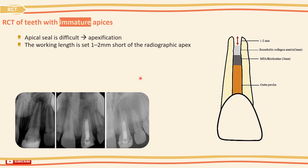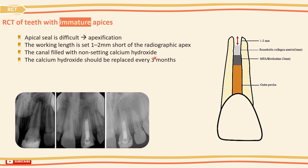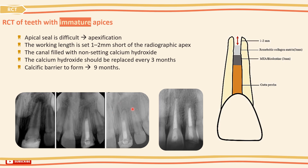Nickel-titanium files are used in order to negotiate any undercuts. Then the canal should be filled with radio-opaque non-setting calcium hydroxide to the apex and sealed. This calcium hydroxide filling should be replaced every 3 months until a calcific apical barrier is detectable by gentle probing with a paper point. The average time for a calcific barrier to form at the apex is about 9 months. Then the canal can be filled with a permanent root canal filling.